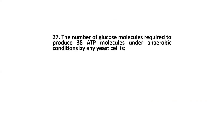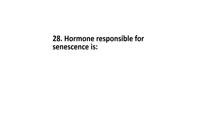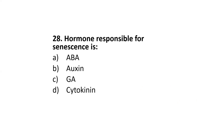Next: the number of glucose molecules required to produce 38 ATP molecules under anaerobic conditions by yeast is — 1, 19, 2, or 38? The correct option is 19, because one glucose molecule produces 2 ATP molecules for yeast under anaerobic conditions; hence 19 molecules of glucose are required to produce 38 ATP molecules.